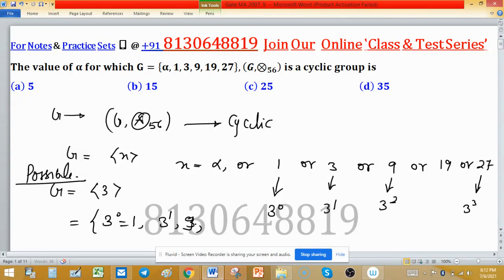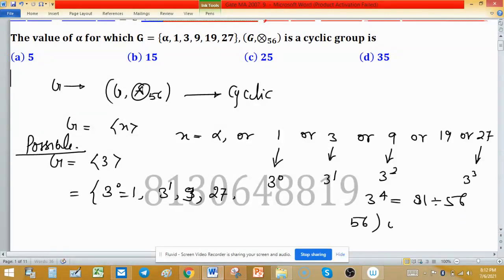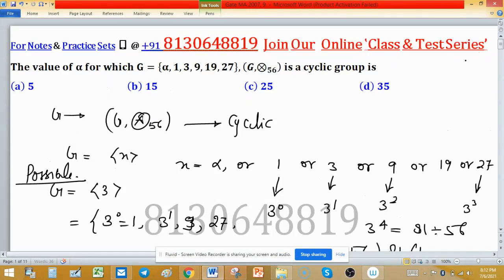Then 27, and 3^4. Now 3^4 is 81. 81 divided by 56 - what will be the remainder? 56×1 is 56, and after subtracting we get 25.